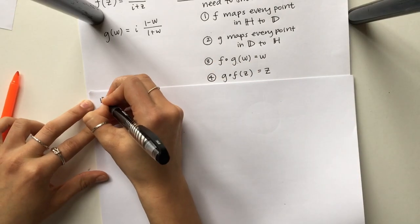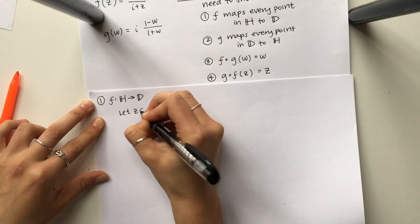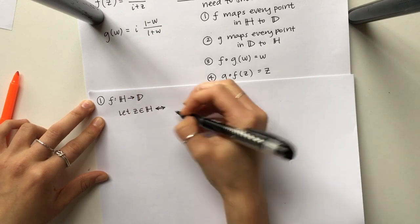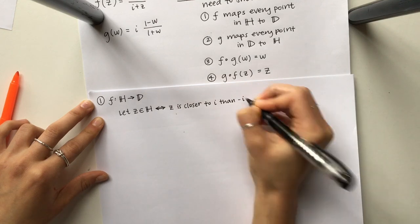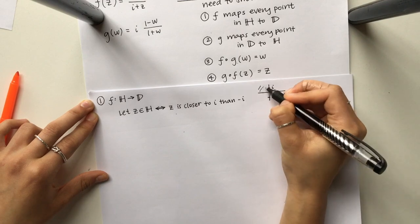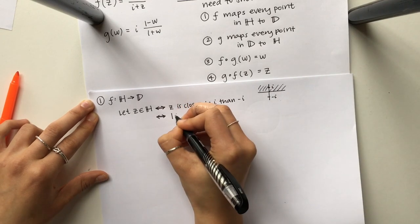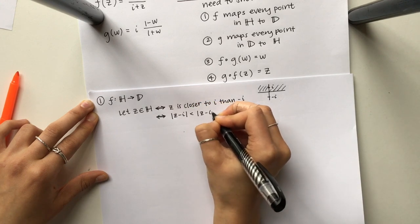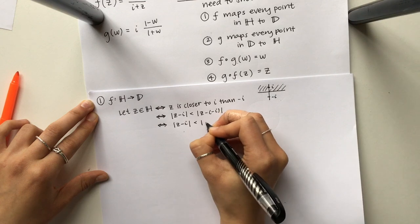Okay so we'll start with the first thing: that f maps H to D. So we're going to start with any point inside of H. So let z be an element of H, and if that's true then it must be true that z is closer to i than it is to negative i. And if I just draw a picture you can see that every single point inside H must be closer to i than negative i, which means that the distance from z to i is less than the distance from z to negative i.